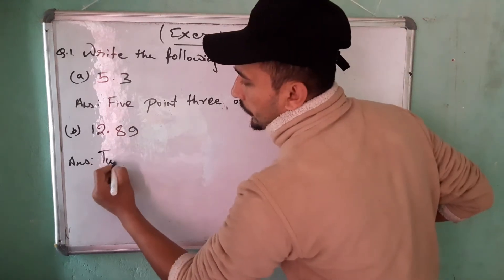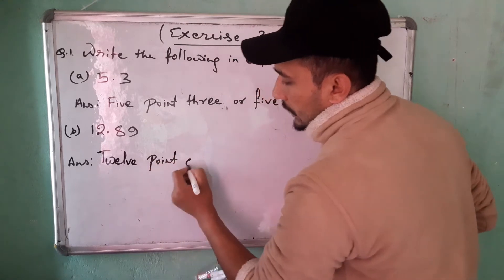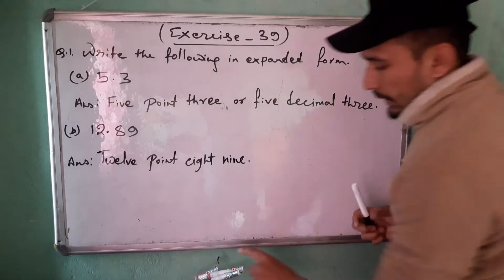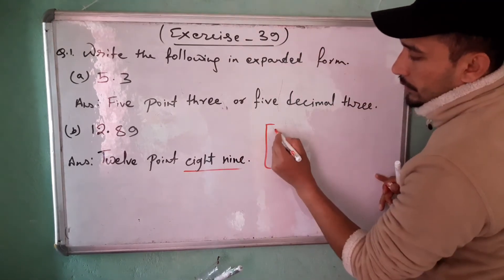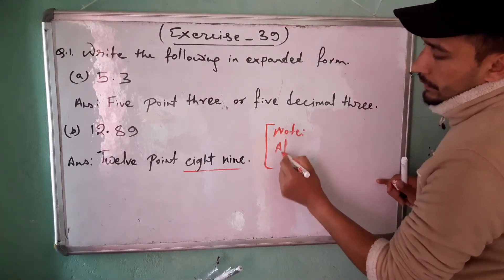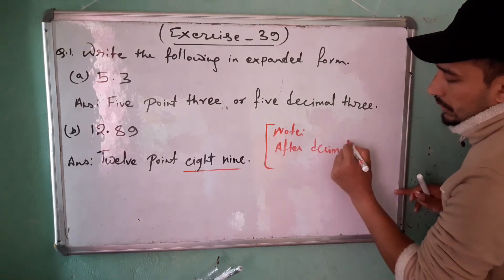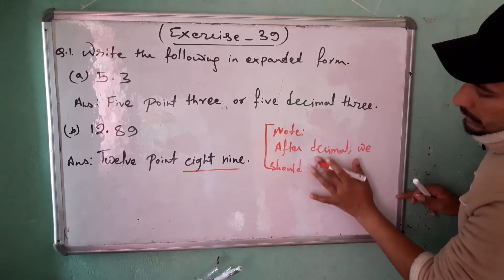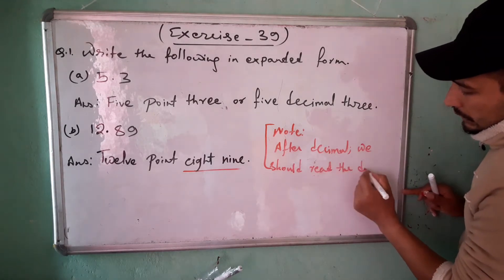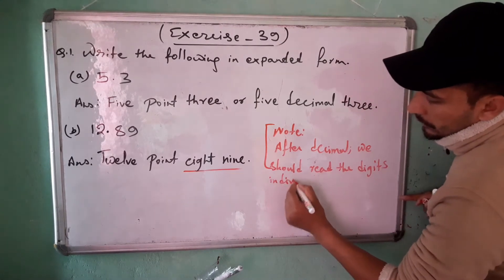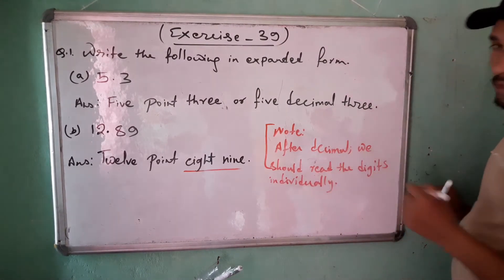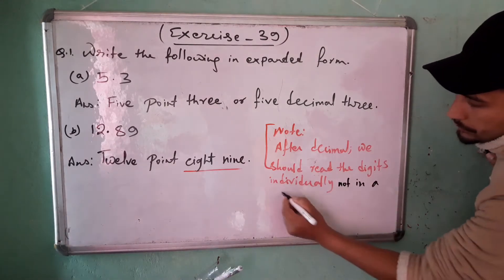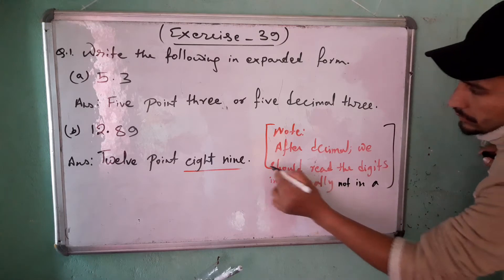12.89 — remember this: after the decimal point, we should read digits individually, not in a group. This is a very important thing.